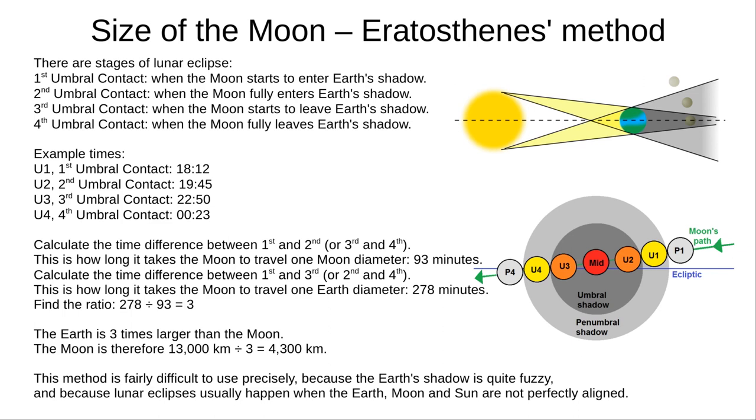We're going to calculate the time taken to go from the first to the second umbral contact. This is how long it takes the moon to travel one moon's diameter. And in this case it's 93 minutes. We then calculate the time taken to travel from the first to the third umbral contacts. This is how long it takes the moon to travel one Earth diameter. 278 minutes.